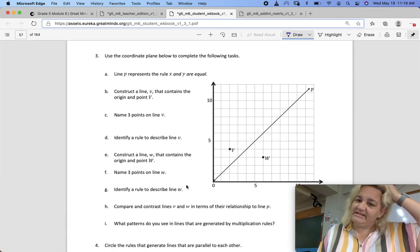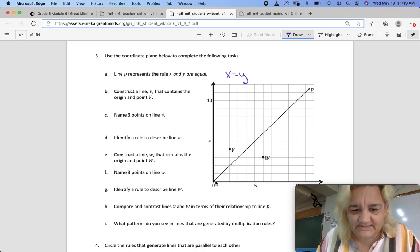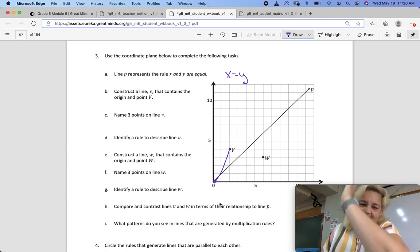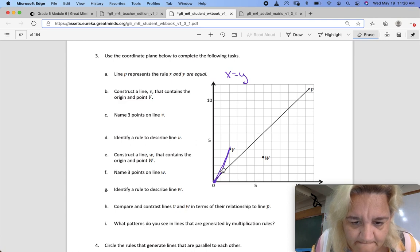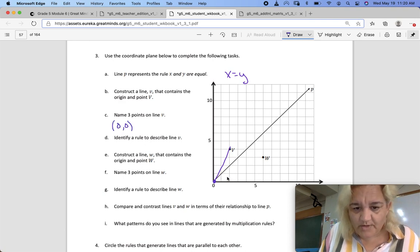Number 3. Use the coordinate plane below to complete the following tasks. Line P represents the rule X and Y are equal. Construct line V that contains the origin and point V. So it's got to have the origin and point V. Now that is not a parallel line. So instead of addition, we're going to use multiplication. Because it doesn't go parallel. So multiplication is going to give us that straight up and down. Name three points on that line. We know that 1 is 0, 0 because they said it goes through the origin. 1 would be 2 and 4.